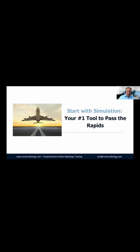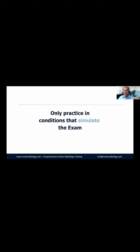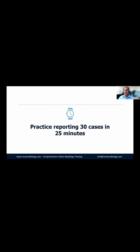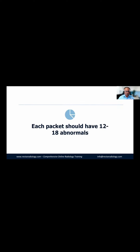The number one tool for passing the rapids is simulation — practice in conditions that simulate the exam. Practice doing those 30 cases in 25 minutes. Remember, each packet won't have more than 12 to 18 abnormals, so it's usually that kind of ratio.